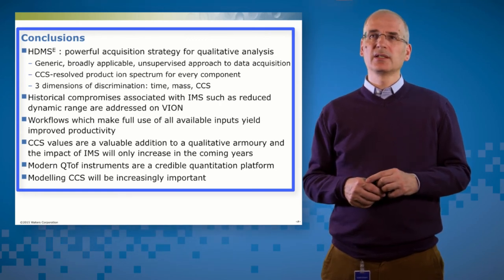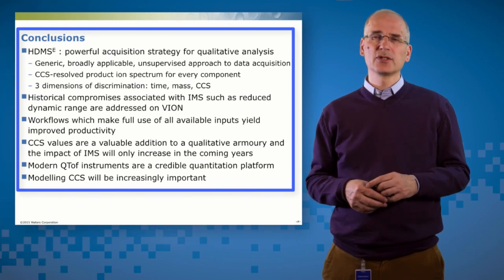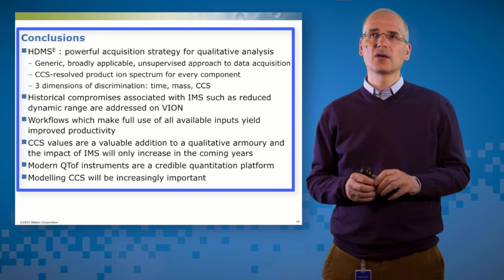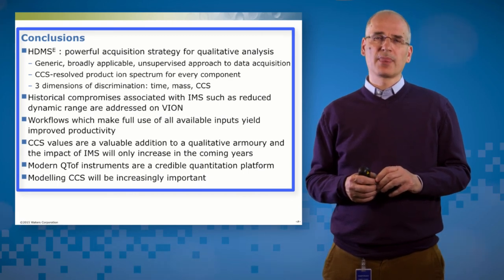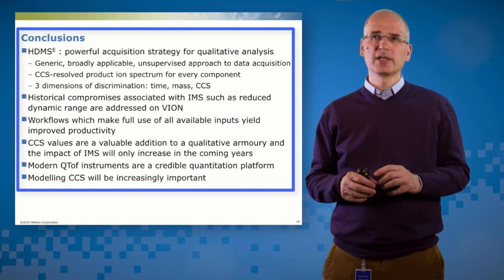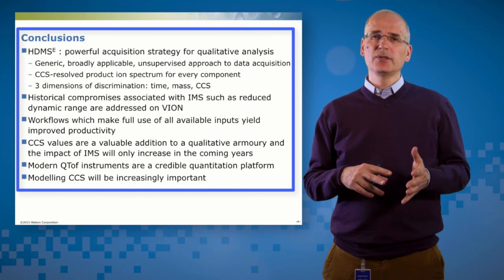Historically, switching on ion mobility in spectrometers has led to some compromises. So for example, in linear dynamic range and sensitivity, but on Vion, those are addressed. So those improvements in hardware have given us an extra order of magnitude of linear dynamic range, which we can make very good use of.